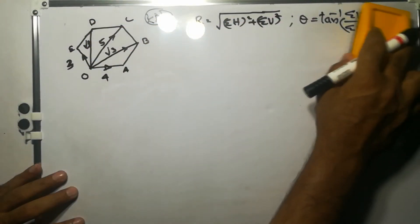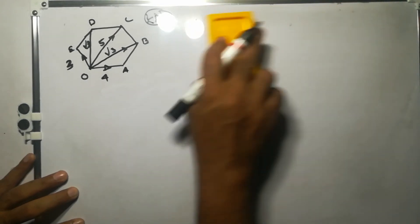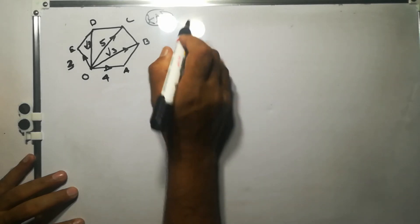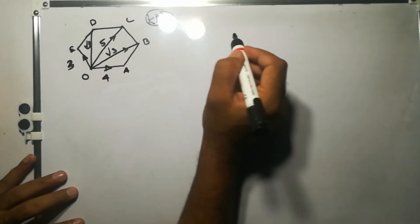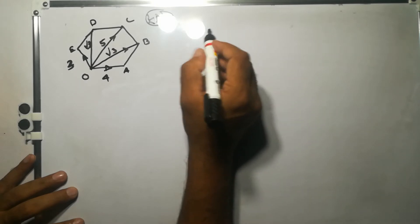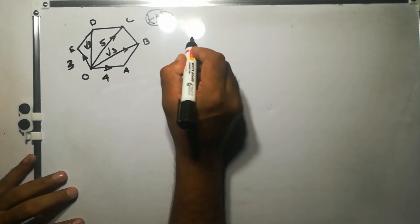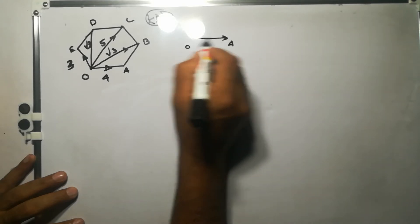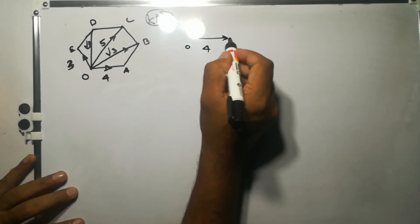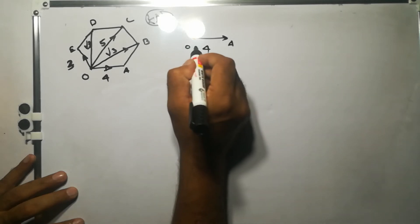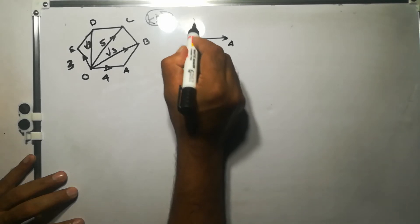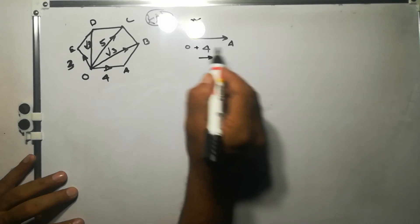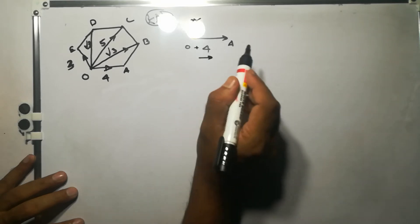Now, to find σh and σv, we will resolve each force into its vertical and horizontal components. Let us consider the first force OA. Its magnitude is 4 kN and it is acting in the horizontal direction towards the right, so it is positive. It does not have any vertical component — only a horizontal component of magnitude 4 kN, direction positive.